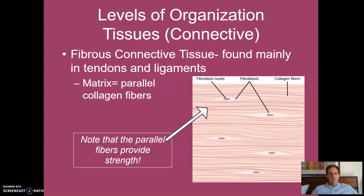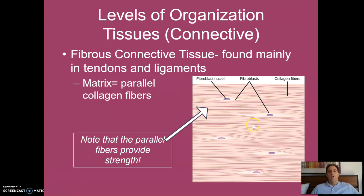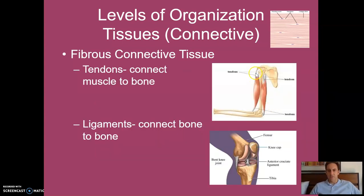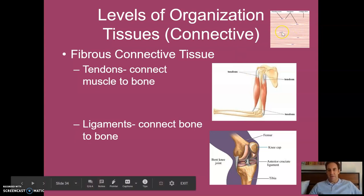Another type is fibrous connective tissue, found mainly in your tendons and ligaments. Here the matrix consists of parallel collagen fibers, densely packed in smooth layers, with fibroblasts as the cells. A tendon connects muscle to bone — you can feel your Achilles tendon sliding down toward your ankle — while a ligament connects bone to bone. Both have very densely packed protein fibers.